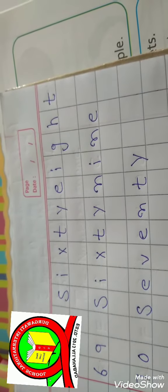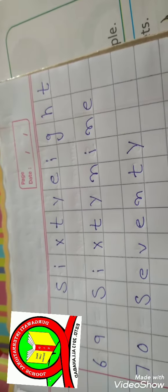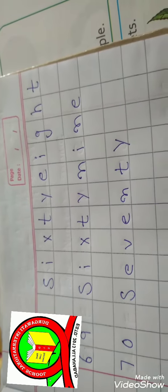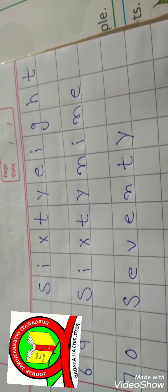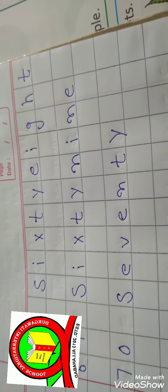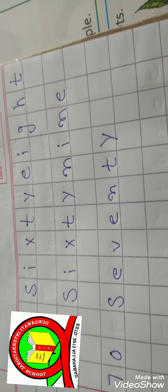S I X T Y E I G H T, 68. S I X T Y N I N E, 69. S E V E N T Y, 70. So students,